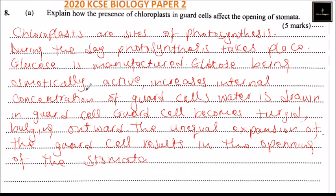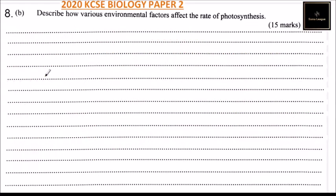That is how you explain how the presence of chloroplasts in guard cells affects the opening of the stomata. If you explain something close to that, you should be able to get five marks. Now let's go to part B of this question — describe how various environmental factors affect the rate of photosynthesis. This question is worth 15 marks, and part A was five marks, giving a total of 20.